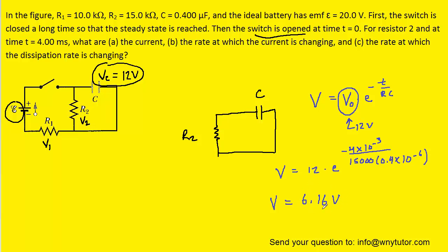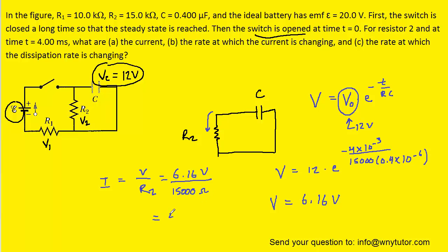Now that we have that voltage, we can calculate the current flowing through resistor 2. Current is simply equal to voltage divided by resistance. We plug in the voltage supplied by the discharging capacitor and divide by the resistance R2, which is 15,000 ohms. We get approximately 4.11 times 10 to the minus 4 amps. This is the correct answer to part A.